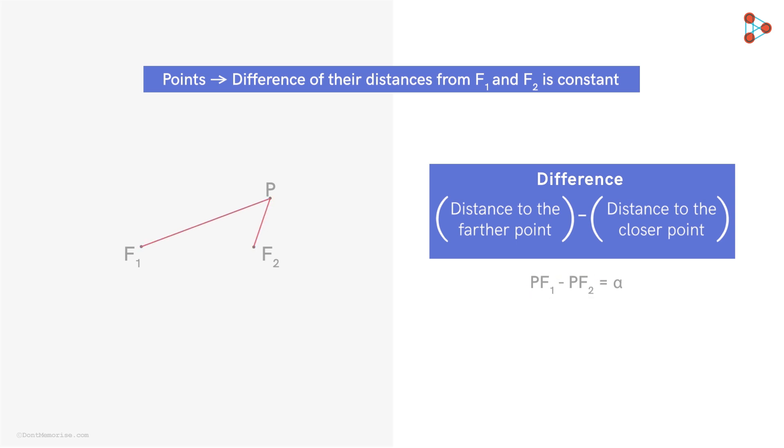Now the question is, are there any other points the difference of whose distances from F1 and F2 is alpha? Yes, there are many such points. The collection of all such points is called a hyperbola.